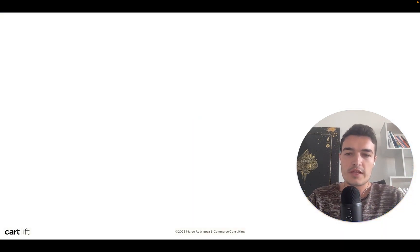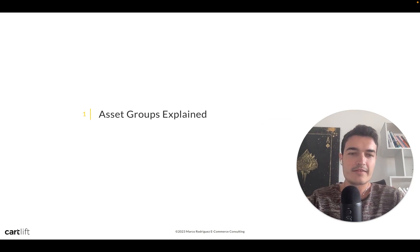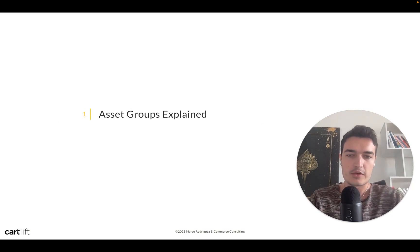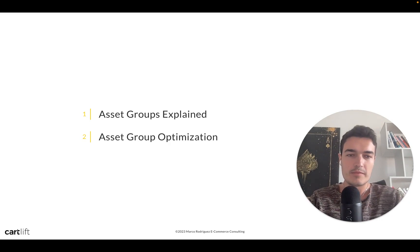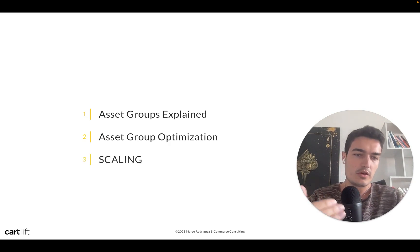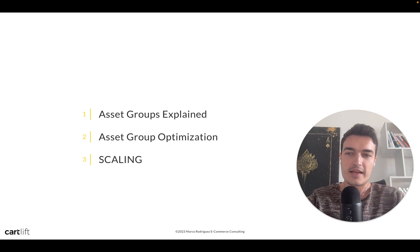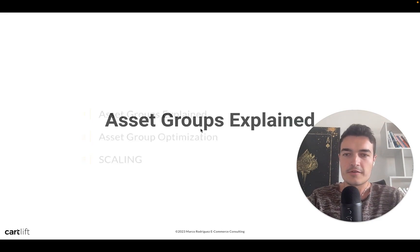Without further ado, let's cover three topics: first, I'll explain asset groups in general — how they work and some misconceptions — briefly. Then I'll focus on asset group optimization to squeeze more ROAS, performance, and revenue out of them. And finally, how to scale them. It will be very specific and tactical.